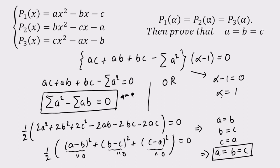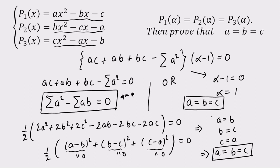Now for the case alpha = 1: substituting alpha = 1 into all three equations and equating them again yields A = B = C. So if alpha is a real value for which P1(alpha) = P2(alpha) = P3(alpha), we have proved that A = B = C in both cases. That will be all for this question.